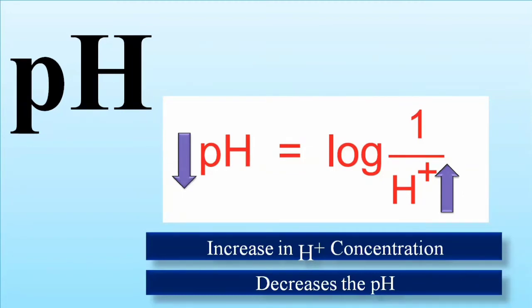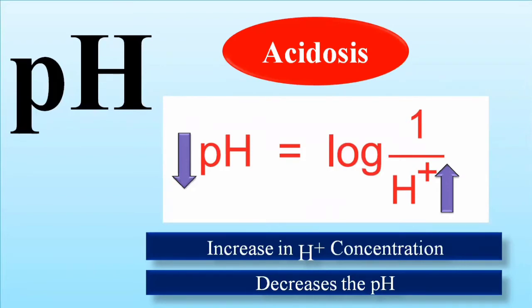If the pH is low — the neutral pH being 7 — and there is an increased amount of hydrogen ion in the body, this condition is known as acidosis. Acidosis, as discussed in the previous lecture, involves substances that release hydrogen ions acting as hydrogen donors. So increased concentration of hydrogen ion means low pH, and this condition is known as acidosis.